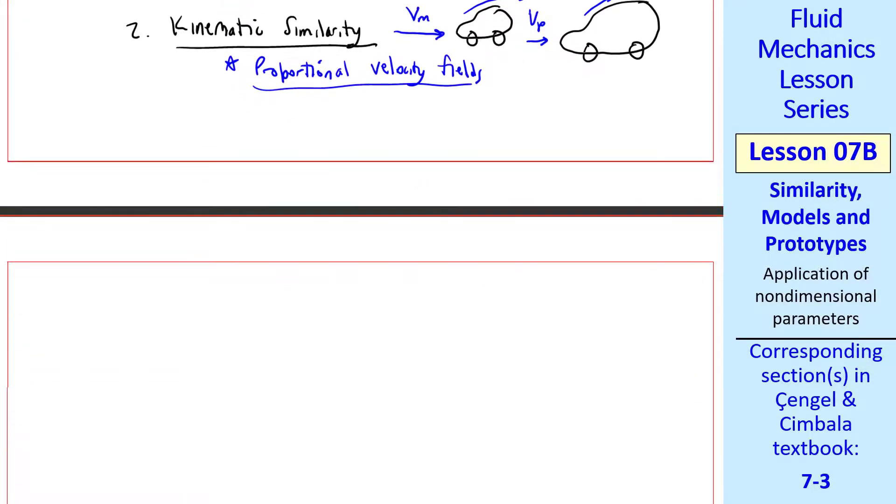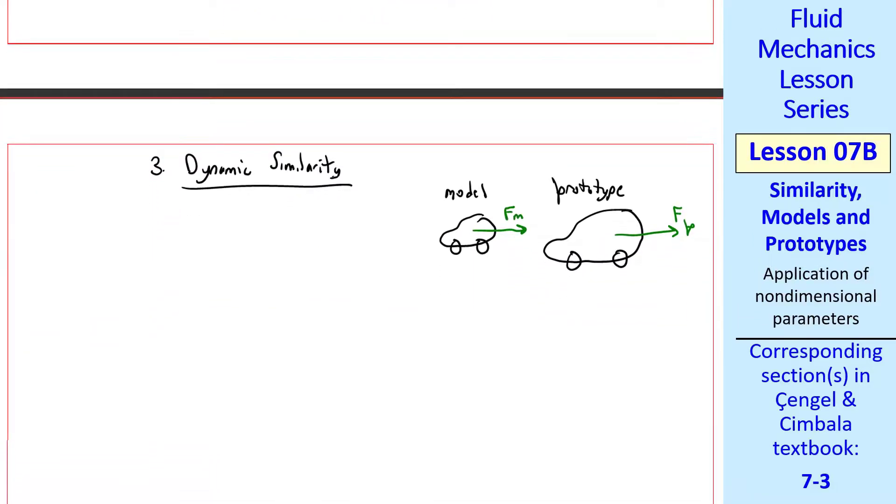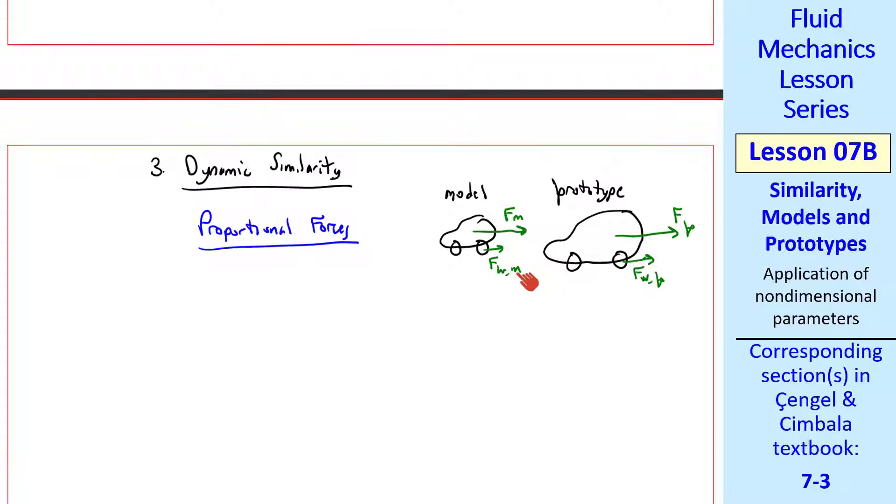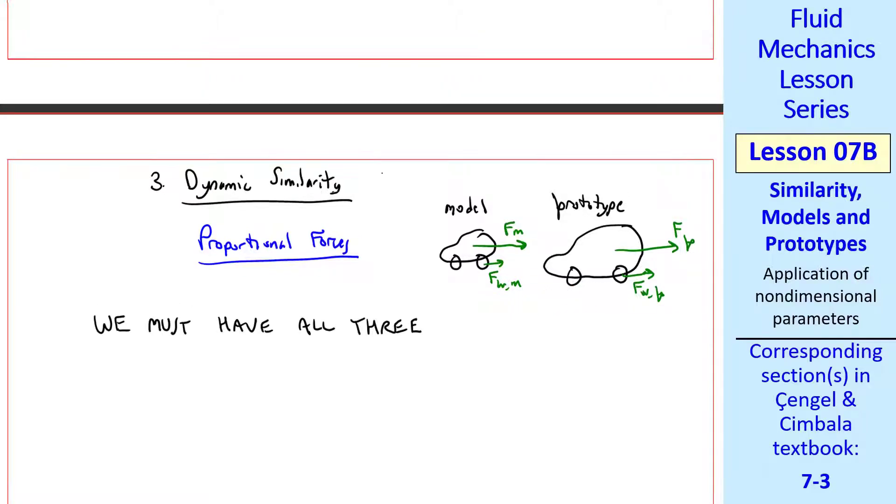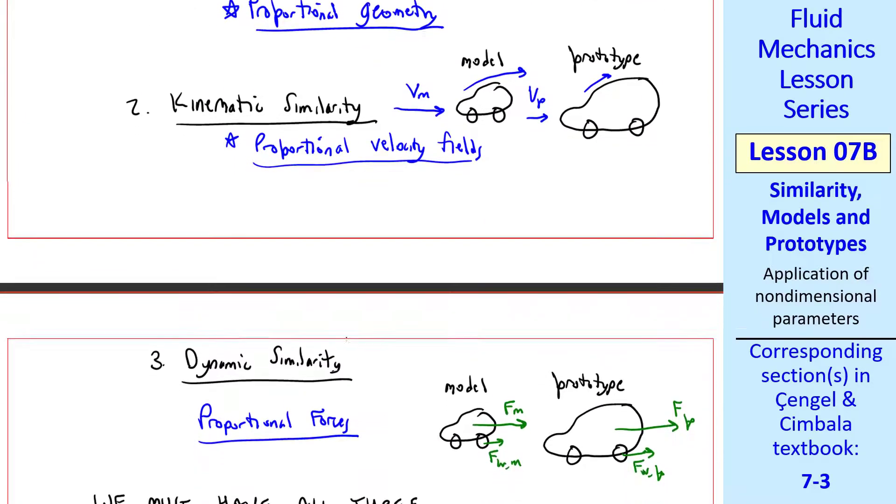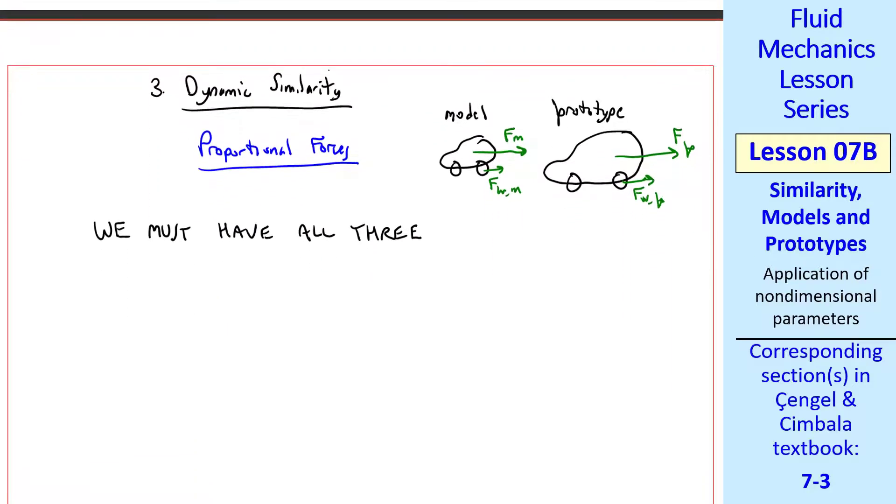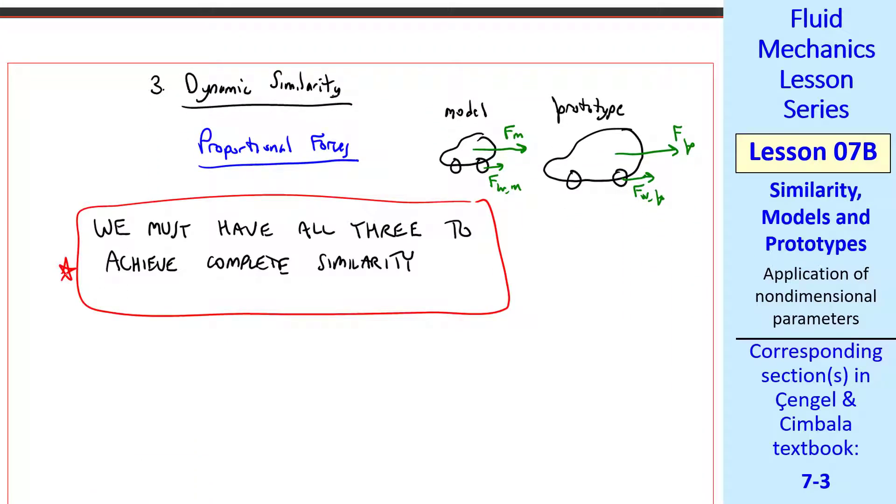Third, there's dynamic similarity, which means proportional forces. For example, the drag force on the whole car for the model, FM, divided by the force on one of the wheels, for example, would have to have the same proportion for the prototype, as I sketch here. We must have all three of these: geometric, kinematic, and dynamic similarity, to achieve complete similarity. If so, we can confidently scale up or down from model to prototype.